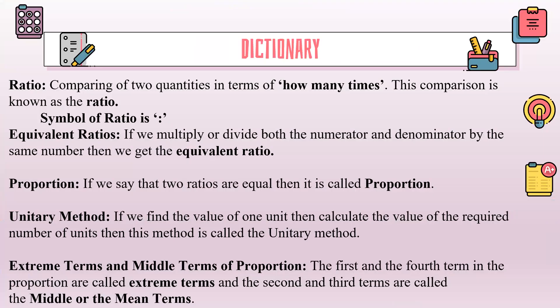Dictionary. What is ratio? Comparing two quantities in terms of how many times — this comparison is known as ratio. The symbol of ratio is this.